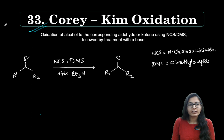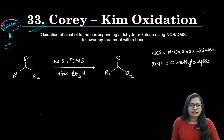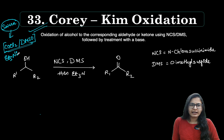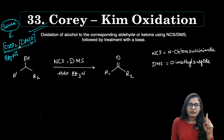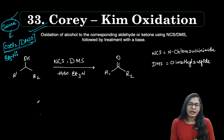The Corey-Kim oxidation is very similar to the Swern oxidation, which we have already seen — I will paste the link of that video. The Swern oxidation uses oxalyl chloride (COCl₂) and DMSO in the first step, then triethylamine as a base in the second step for elimination. Swern oxidation, Corey-Kim oxidation, and Moffat oxidation are three very similar reactions — just a change of reagent combination — converting alcohol to ketone or aldehyde.